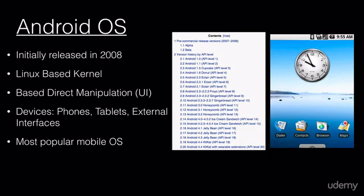You can see from the Wikipedia article there have been tons of versions of Android since its release in 2008. We're currently on 4.4 KitKat. Android is based on what's called the direct manipulation UI — a user interface popular for touchscreen devices. In combination with the hardware, it's known for recognizing gestures like taps, swipes, and pinches.